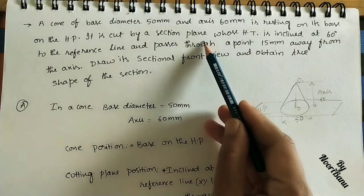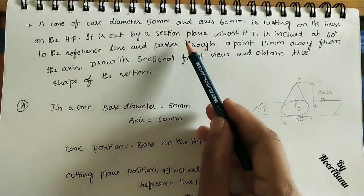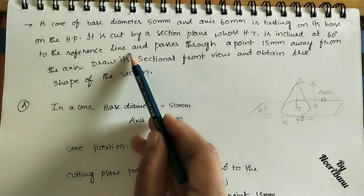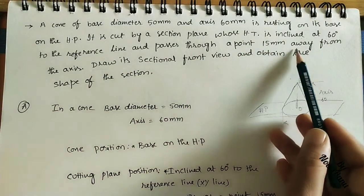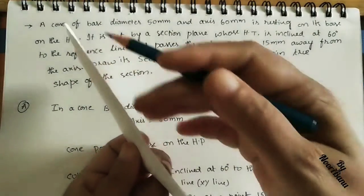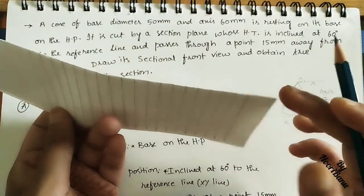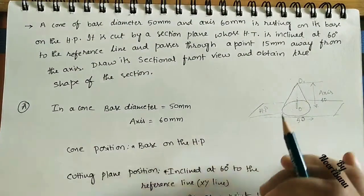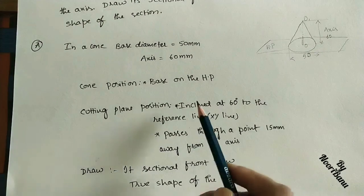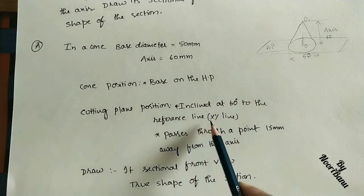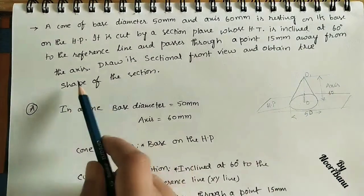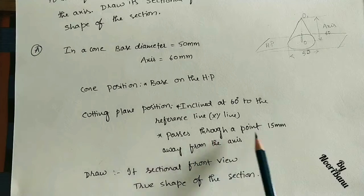The cone is cut by a section plane whose HT is inclined at 60 degrees to the reference line and passes through a point 15 mm from the axis. HT refers to the two ends of the cutting plane. It is inclined at 60 degrees to the XY line and also passes through a point 15 mm away from the axis.